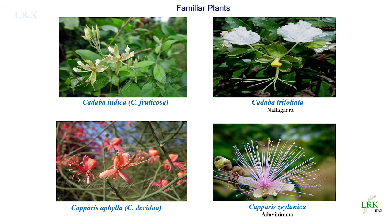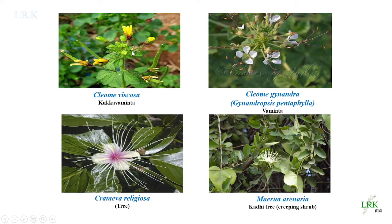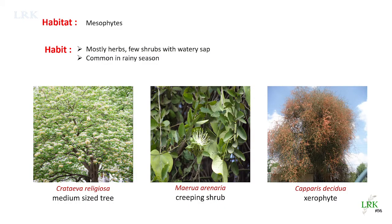Now we will see some important plants of this family. These include Cadaba indica (also known as Cadaba fruticosa), Cadaba trifoliata, Capparis aphylla (a xerophyte, also known as Capparis decidua), Capparis zeylanica (called 'adivinimma' in Telugu), Cleome viscosa (very common during rainy seasons, called 'kukka vaminta' in Telugu), Cleome gynandra (also called Gynandropsis pentaphylla, called 'vaminta' locally), Crataeva religiosa (a tree in this family), and Maerua arenaria (a scandent/climbing shrub).